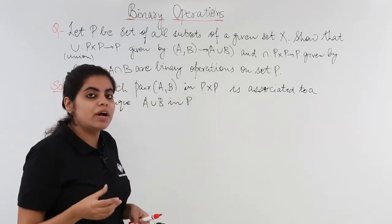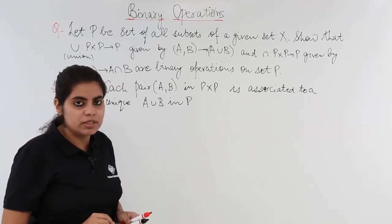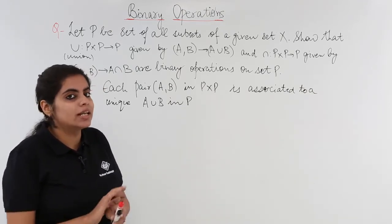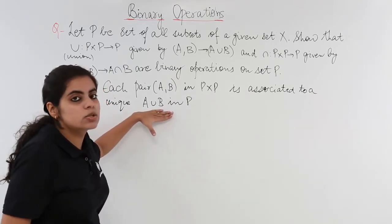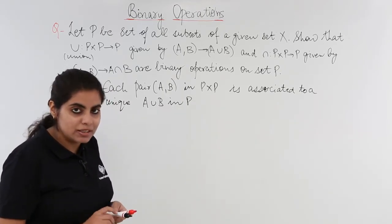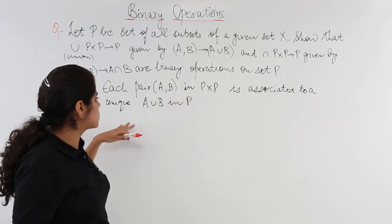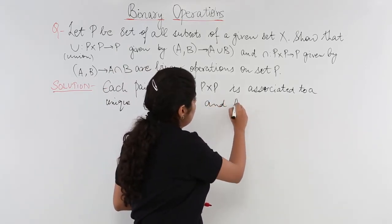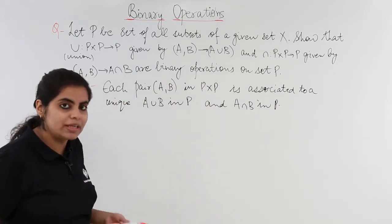That means if I take an ordered pair where we have A and B, we find that each element belonging to that ordered pair or category is not left unassociated. Indeed it is associated - in union it is associated to union and in intersection it is associated to intersection. So it is a closed binary operation on union and intersection both. We write each pair is associated to a unique A union B in P and A intersection B in P. What is P? P is a power set, so definitely it has to be associated.